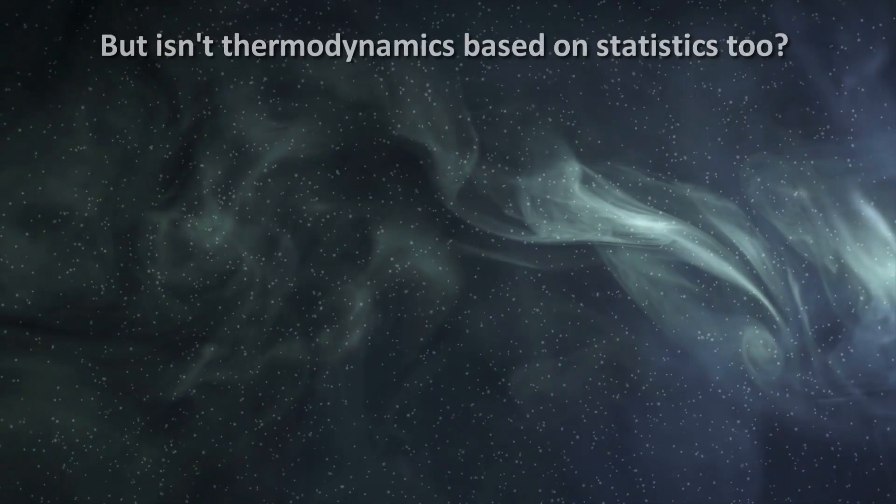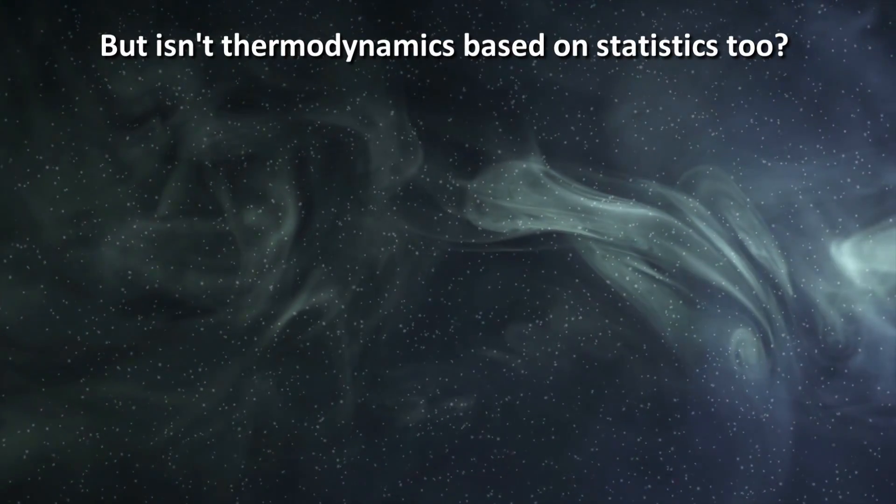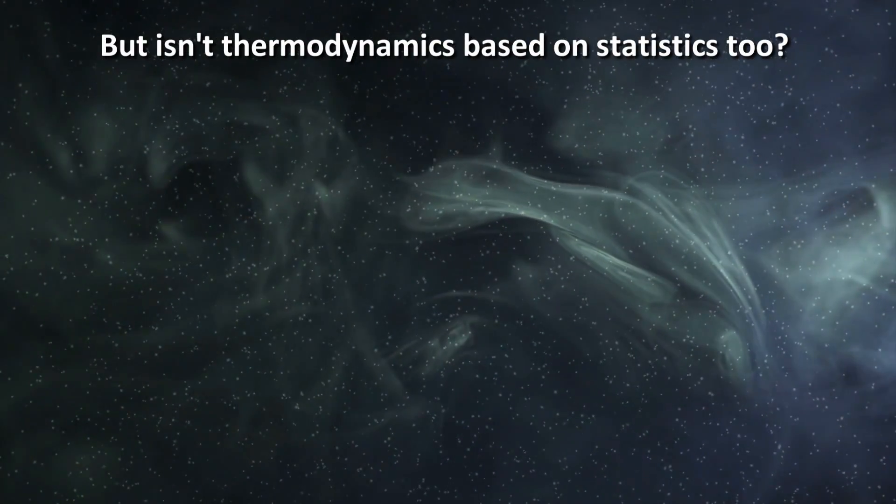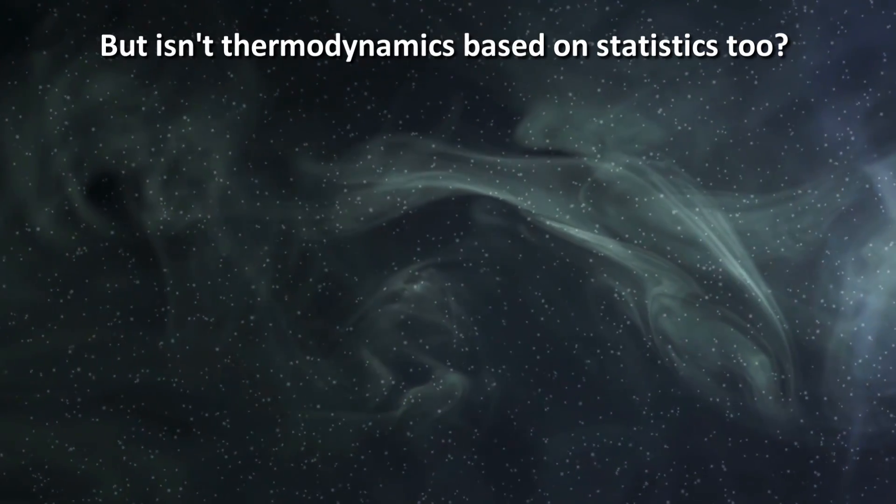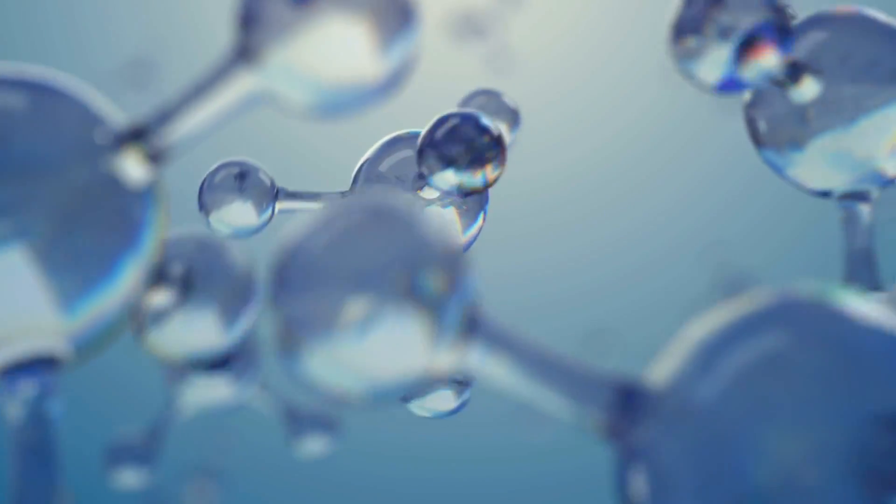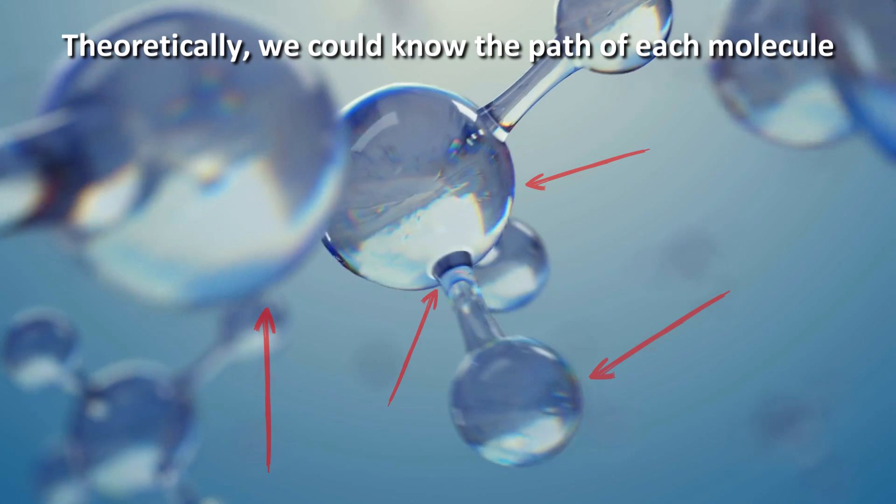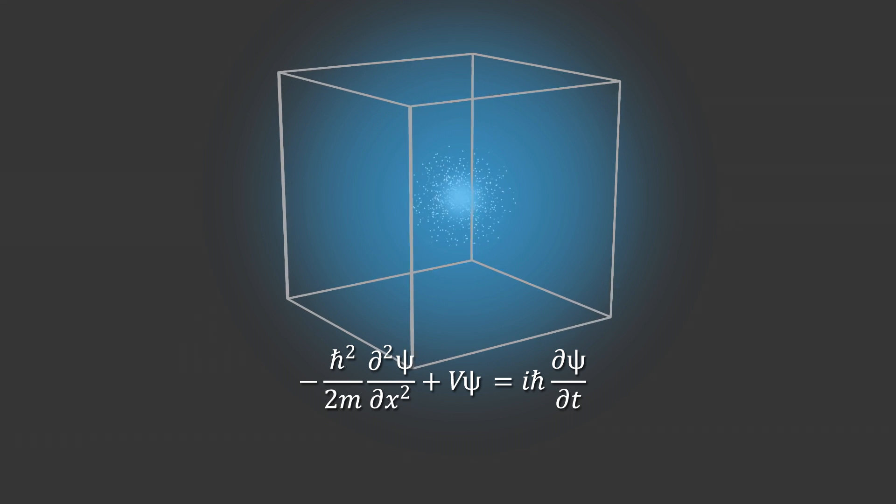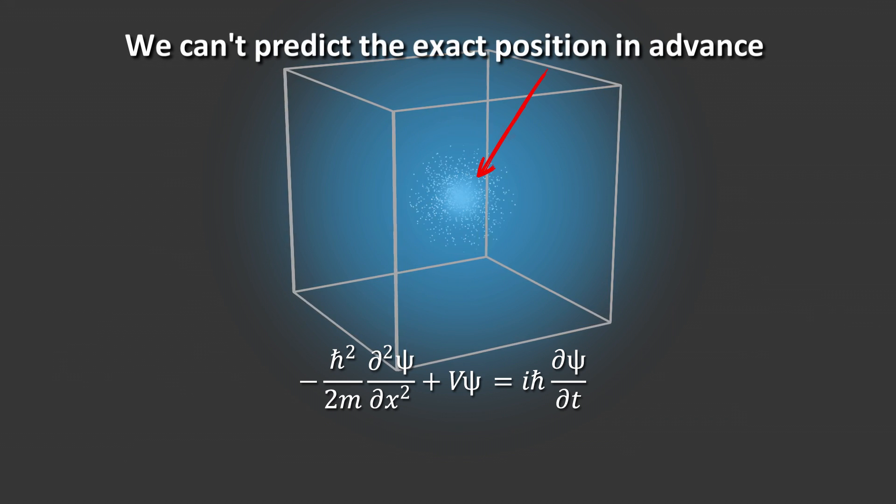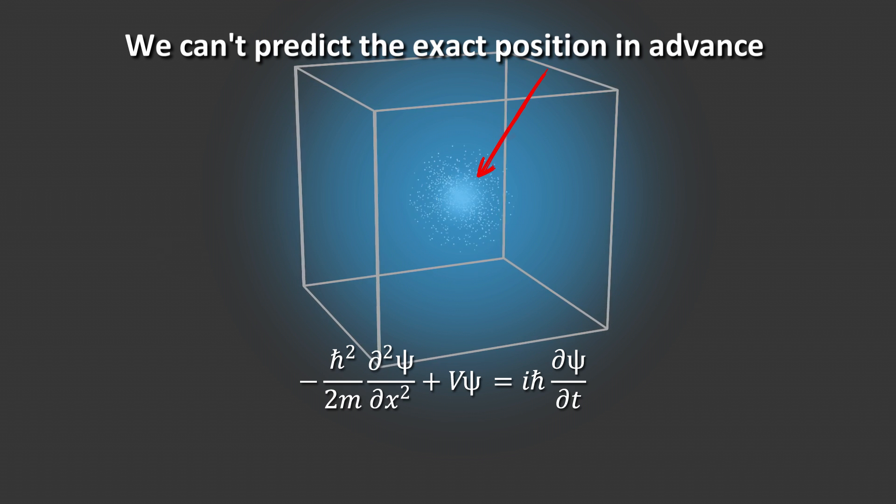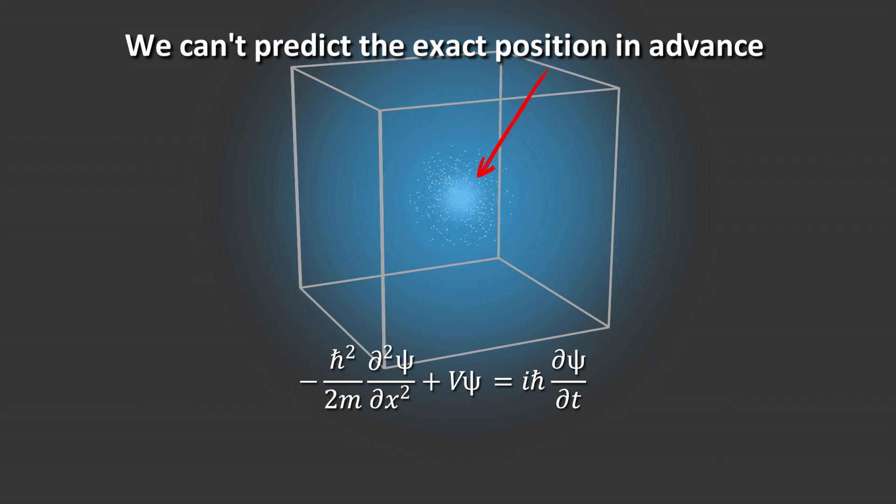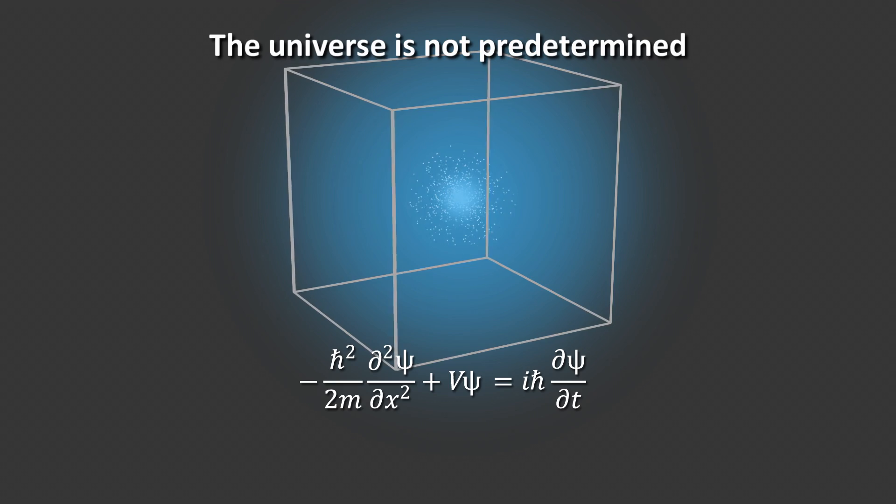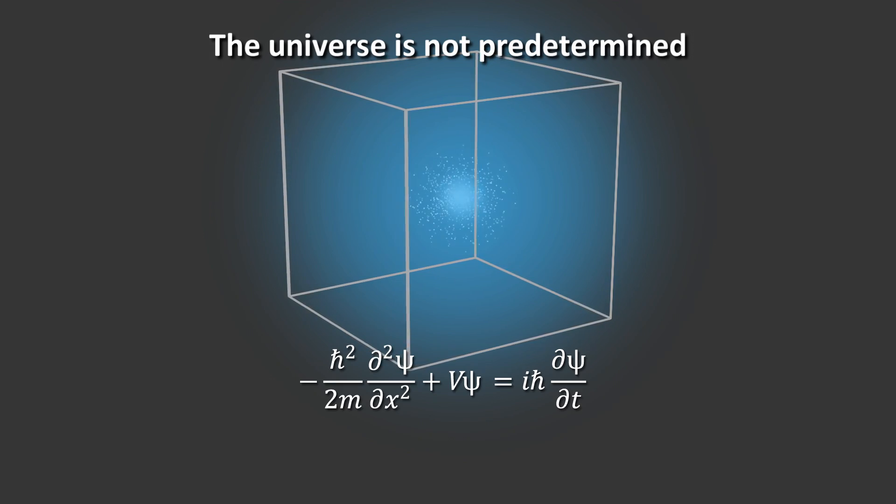You might say, well, this is the same thing as statistical thermodynamics, where statistics are used to describe the motions of molecules in a gas. But in that field, it is just for convenience. Theoretically, the path of every molecule could be determined. It was just not practical, but quantum mechanics is fundamentally different. The positions of particles cannot be determined precisely or predicted in advance. In this sense, the future of the universe is not predetermined in quantum mechanics.